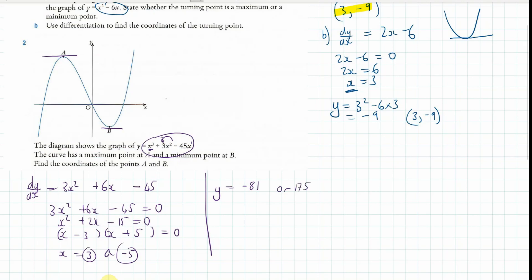So, if I'm correct, I hope I am. This one here is at 3, minus 81. Because those two pair. And the other one is at minus 5, 175. So, this is minus 5, 175.